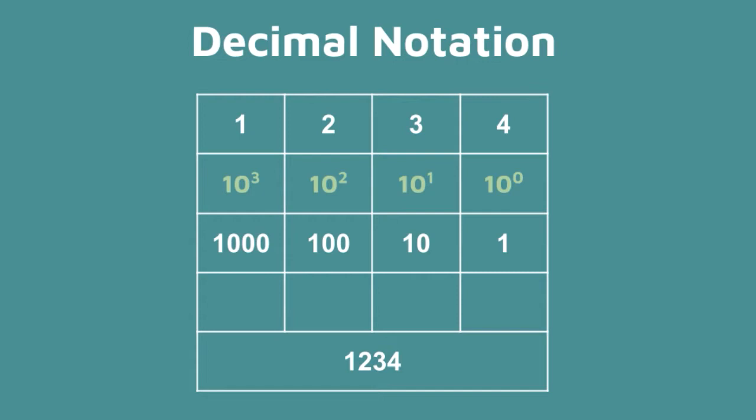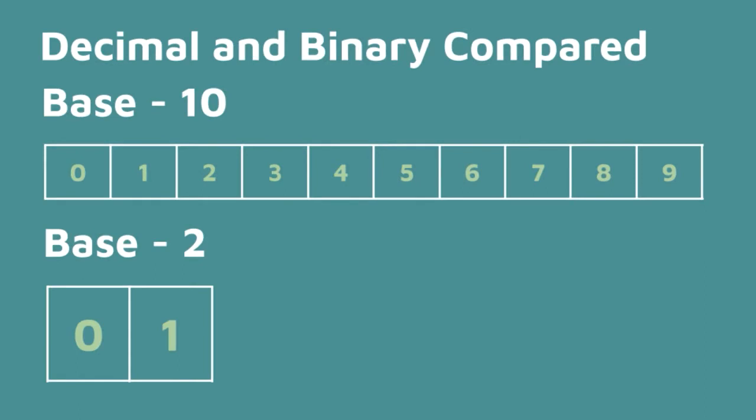If we were to calculate the values, we will multiply 4 times 1 which is 4, 3 times 10 which is 30, 2 times 100 which is 200, and 1 times a thousand which is 1,000, for a total of 1,234. The binary system works in a similar way.